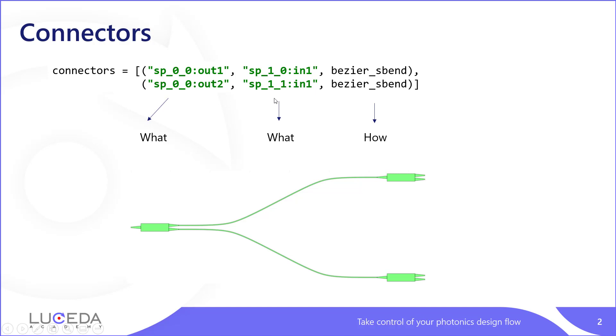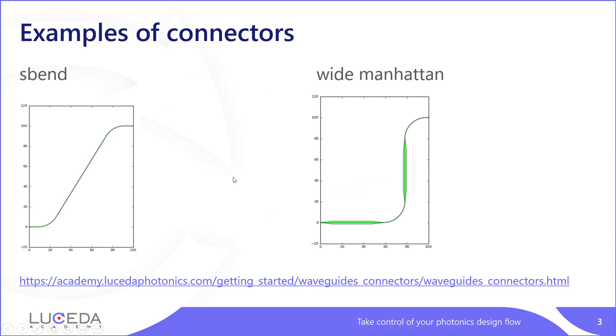In earlier webinars, you have been introduced to connectors, which is the straightforward way to connect things in Ipkis, where basically you say what is connected to what and how. For instance, in this splitter tree, SP00R1 is connected to SP10 using a Bezier S-Bend. There are plenty of connectors available to you in Ipkis, such as Wide Manhattan and others. An overview can be found here.